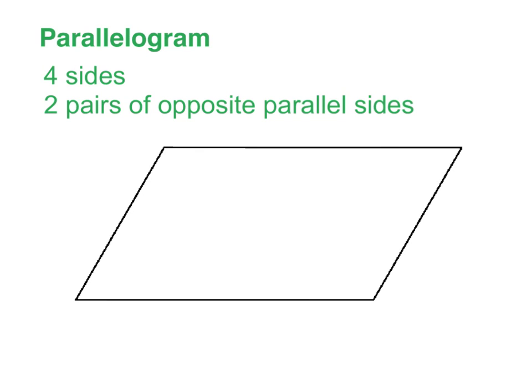This shape, again, is a parallelogram. It has four sides, which makes it a quadrilateral. But this one is special because it has two pairs of opposite parallel sides — this side and this side are completely parallel to each other. That's what makes a parallelogram a parallelogram.